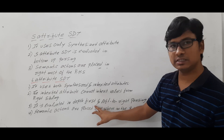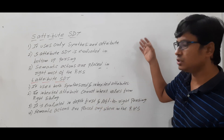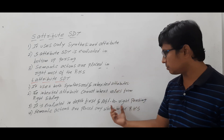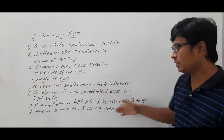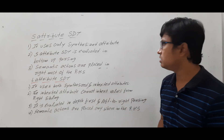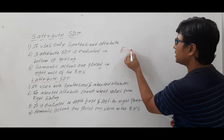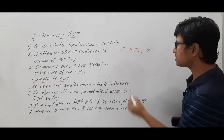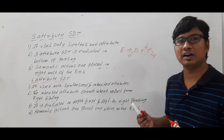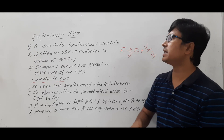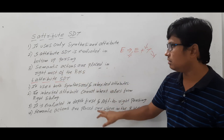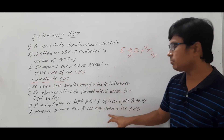L-attribute SDT is evaluated using depth-first search and left-to-right parsing, because you can take values from the parent node or the left sibling but not the right sibling. That's why evaluation proceeds left to right using depth-first search. Semantic actions can be placed anywhere in the RHS. For E → E + T, you can write the semantic action at the beginning, middle, or end of the RHS — anywhere. In S-attribute SDT they must be at the rightmost, but in L-attribute SDT they can be placed anywhere in the RHS.